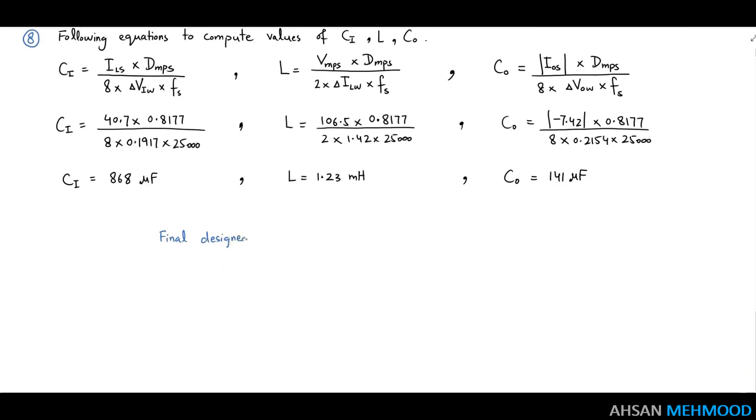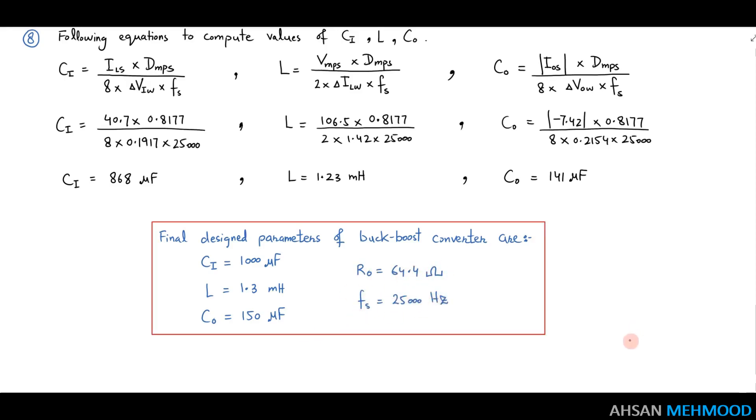These figures can be rounded to make them more practical. So the buck boost converter's final design parameters are input capacitor is 1000μF, inductor is 1.3mH, output capacitor is 150μF, load resistance R node is 64.4Ω and switching frequency is 25kHz.